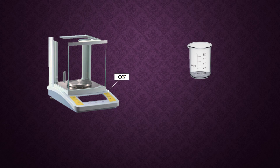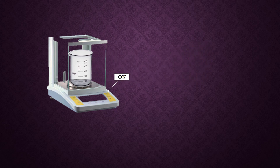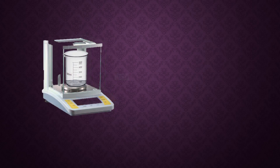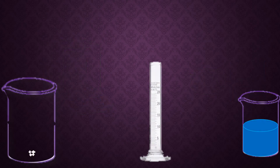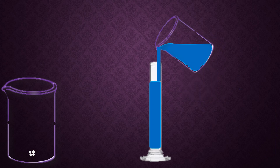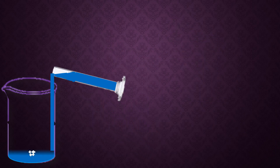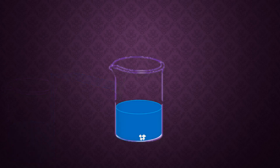Turn the weight balance on and place the beaker on it — it will display the beaker's weight. Adjust using the tare button so the weight reads zero. Take 2 grams of sodium hydroxide into the beaker using a spatula. Pour some distilled water from a beaker into a measuring cylinder, then add the measured water into the beaker containing sodium hydroxide. Start stirring continuously until all the sodium hydroxide is completely dissolved in water.